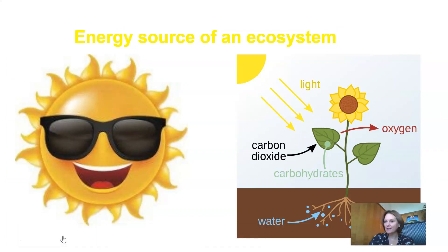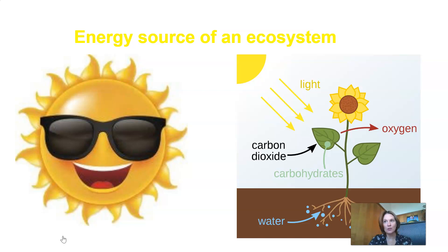Where does an ecosystem get its energy source from? The sun provides the primary energy of an ecosystem. It enters into the system through the process of photosynthesis in plants. Photosynthesis is a process where plants make their own food. Your teachers would have taught this to you right at the beginning of the year. Without photosynthesis, the plants would not be able to produce food for the animals in the ecosystem. Now let's get back to different kinds of ecosystems.